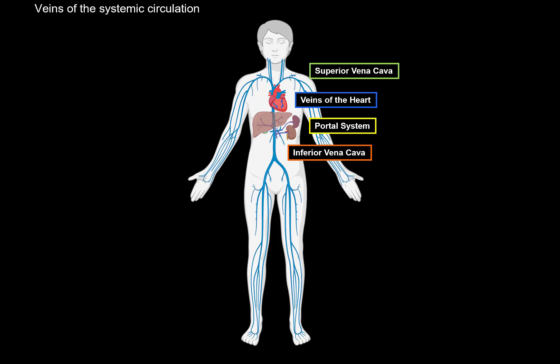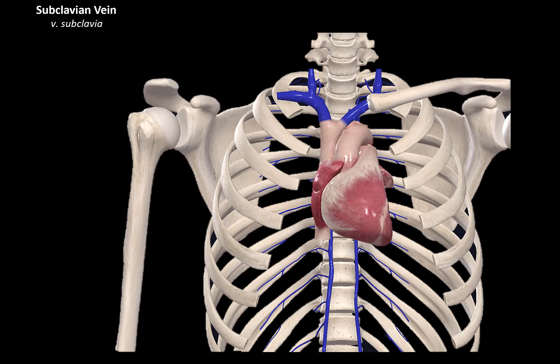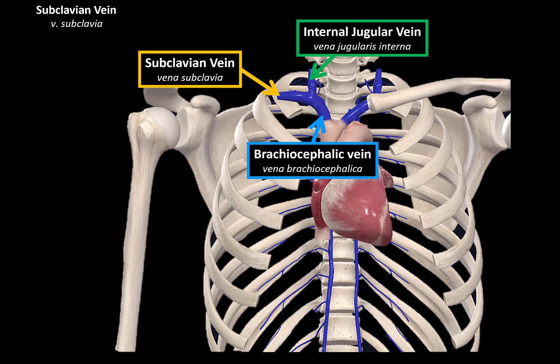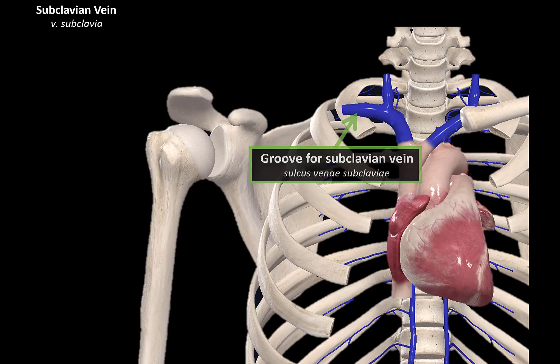Let's now talk briefly about the venous drainage of the upper limb, starting with the subclavian vein. The first thing you need to remember is that the brachiocephalic vein is formed by a union of the subclavian vein and the internal jugular vein. Let's go ahead and zoom in and start covering the subclavian vein. As the subclavian vein passes the first rib, it passes within a groove called the groove for the subclavian vein.